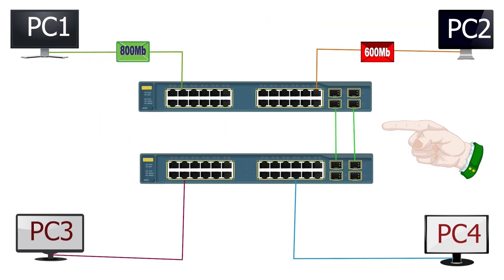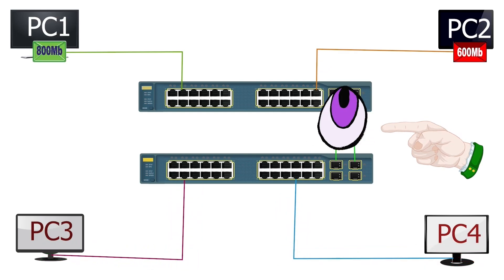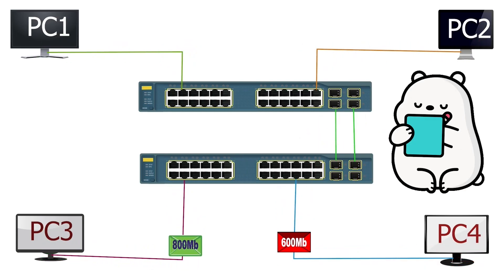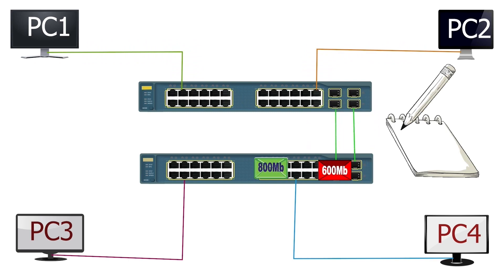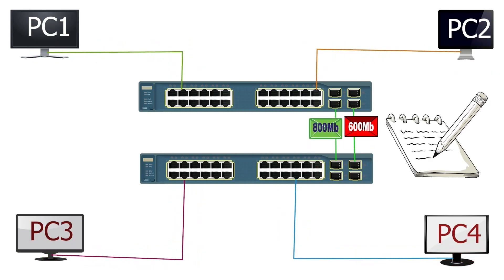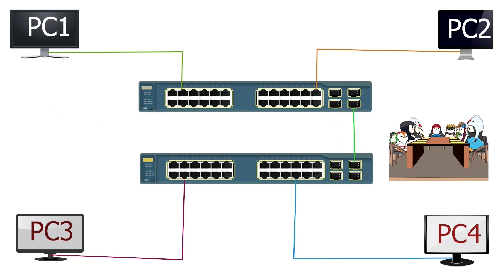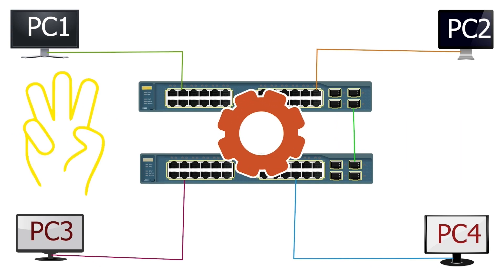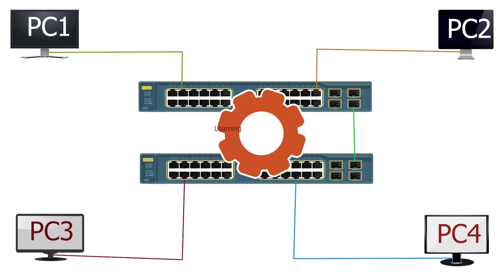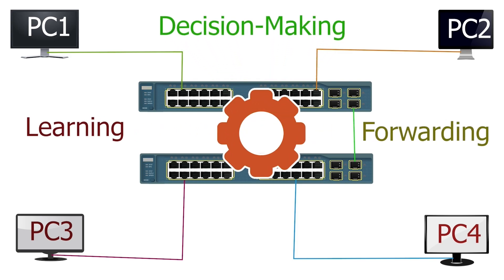If we configure an EtherChannel, it distributes traffic among all ports configured in it using predefined load balancing rules. These rules override the default frame processing function. A switch processes frames through three stages: learning, decision-making, and forwarding.